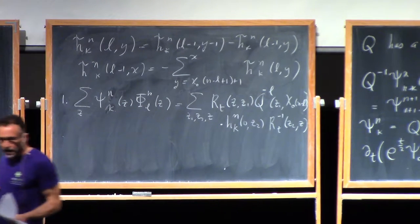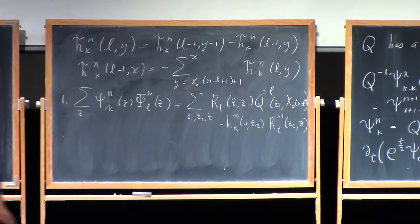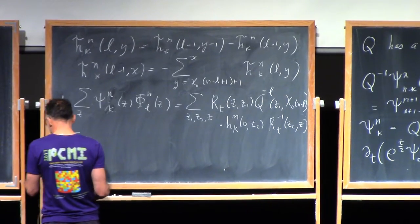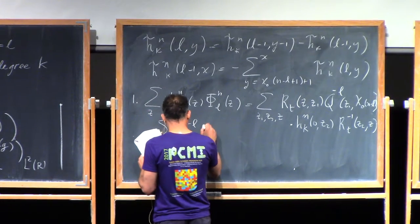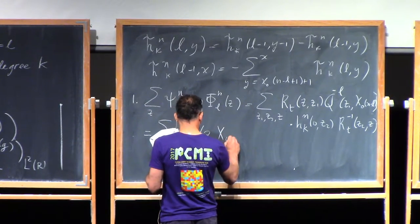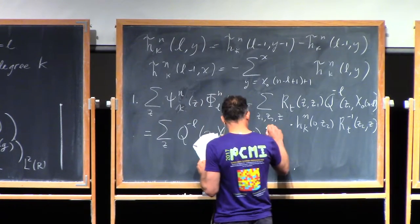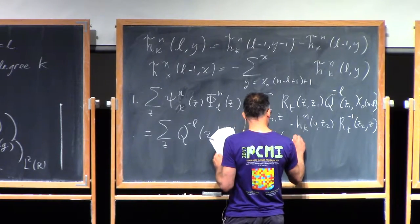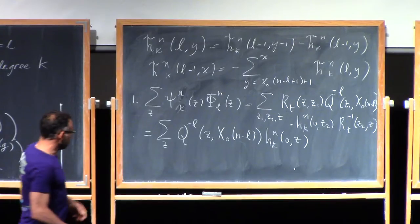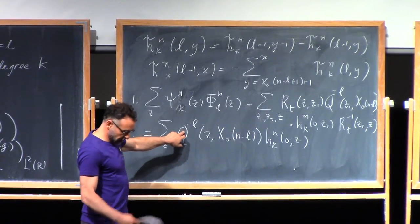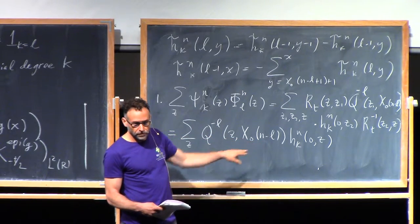You do the sum on the zs, there's r t, r t inverse. So that just becomes an identity, and that means that z1 is equal to z2. So this thing is equal to the sum over z of q to the minus l z x0 n minus l h k n 0 z.